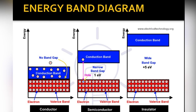From the energy band diagram, in the case of semiconductors, when a small increase in temperature or energy is provided, the electrons in the valence band can easily move to the conduction band to participate in conduction. In the case of insulators, this is difficult because the band gap is very wide and a huge amount of energy is required for electrons to move to the conduction band.